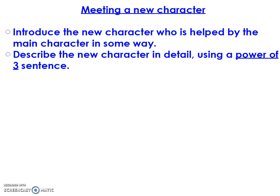Now we've written our opening — let's move on to the second section, where we meet our new character. Use your boxed-up planner, whether you're using the hugged version, the shaking hands version, or your own. Refer back to the model text to see what strategies the original author used. In this section, I want you to introduce the new character who is helped in some way by the main character, and then describe this new character in detail using the power of three — three different pieces of description.